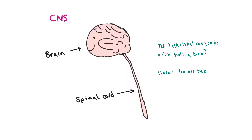Our central nervous system is divided into our brain and our spinal cord, and both of these are protected by bone. Our spinal cord is surrounded by the bony spinal column, made up of several vertebrae so that we can have motion and bending ability in our back. Our spinal cord flexes with that.